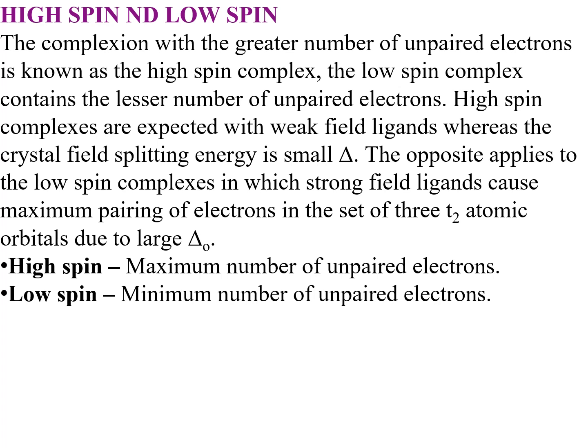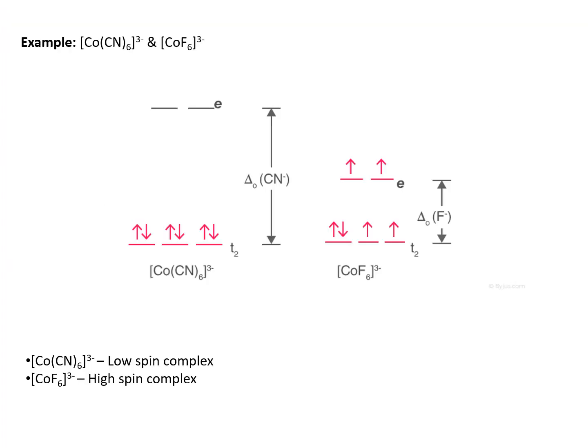In high spin and low spin: the complex with a greater number of unpaired electrons is known as the high spin complex. Low spin complex contains a lesser number of unpaired electrons. High spin complex is expected with a weak field ligand where the crystal field splitting energy is small. The opposite applies to low spin complexes, in which strong field ligands cause maximum pairing of electrons in the t2g set of orbitals due to large delta. High spin has the maximum number of unpaired electrons; low spin has the minimum number of unpaired electrons.